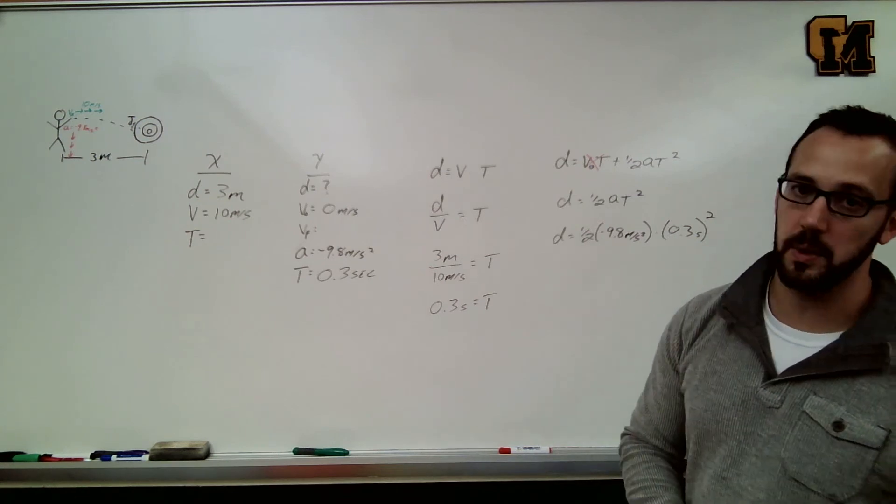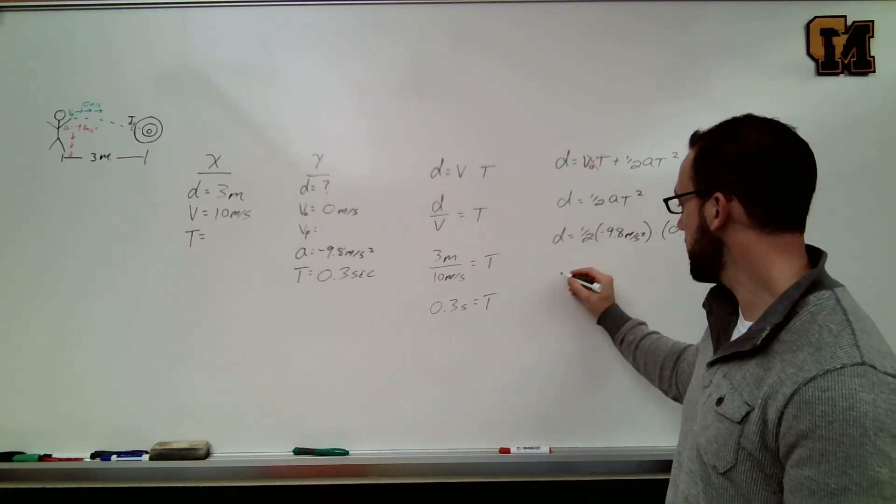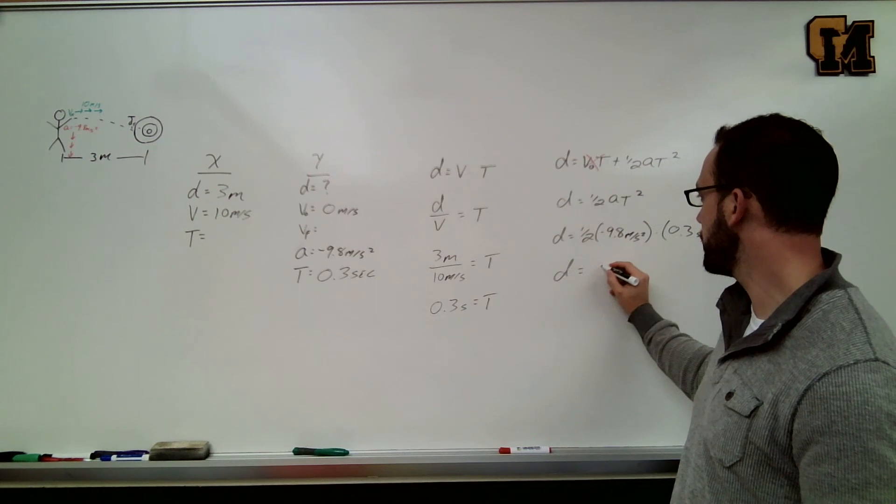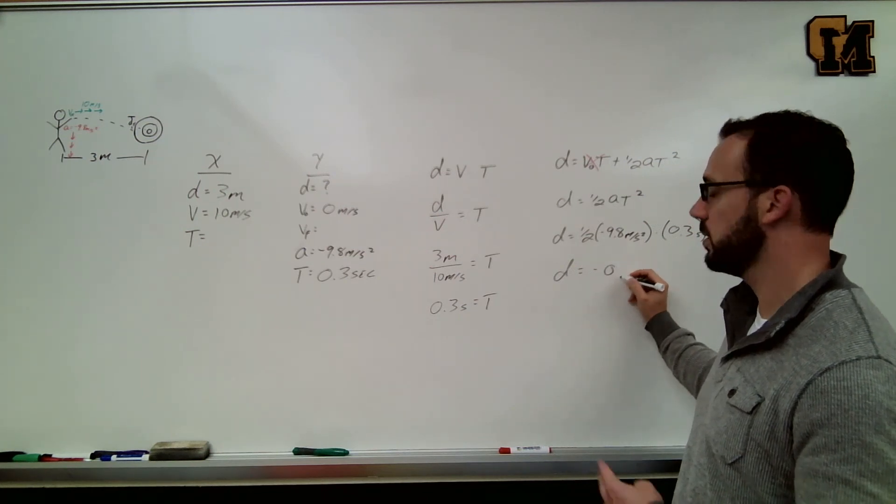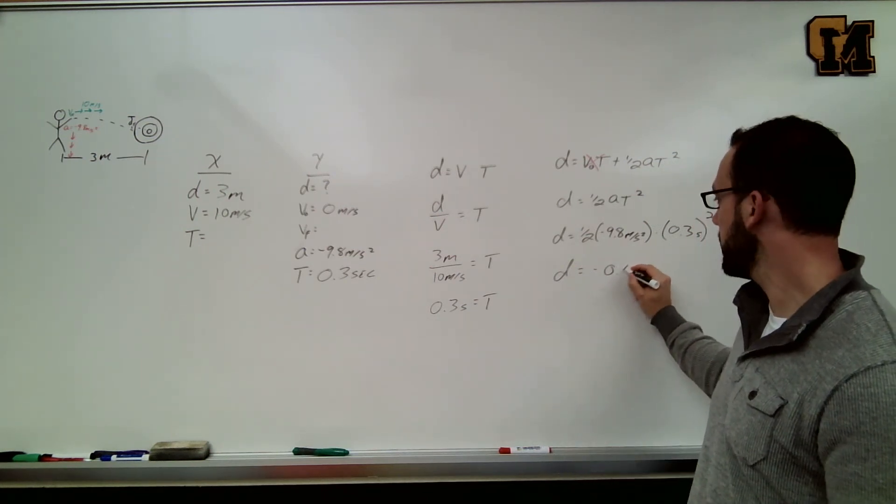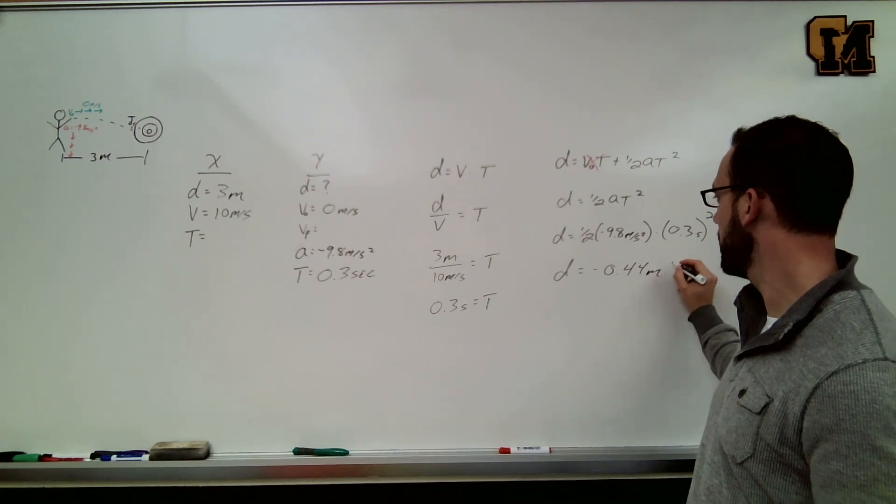Plug that into my calculator and I get an answer of the drop being negative, which is why it's down, 0.44 meters.